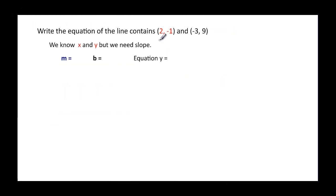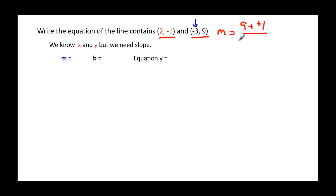What happens when all we're given are two points and no slope? Remember from the beginning — we need a slope and a point. We have to find the slope using both points first. So: y₁ minus y₂ is nine minus negative one, which is the same as nine plus one, equals ten. And x₁ minus x₂ is negative three minus two, which is negative five. So our slope is ten over negative five, which is negative two.